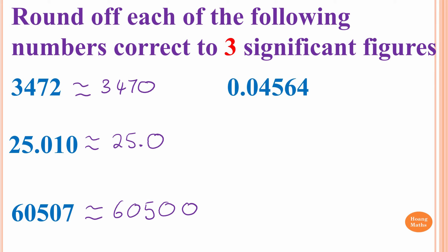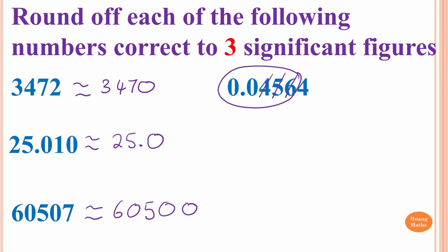This one: we have 1, 2, 3, 4 significant figures, because zeros at the front of a digit are not significant. We want to round off to 3, so we count 1, 2, 3. We check the number after 6, which is 4 — less than 5, so we round down. The answer is 0.0456.